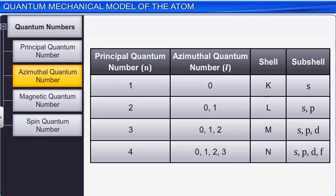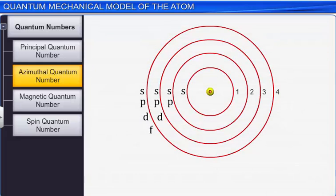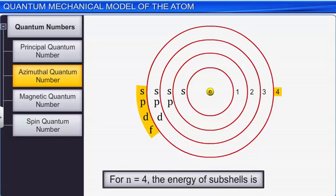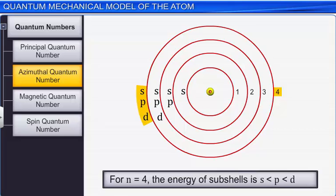Thus, the subshells in the K shell (n=1) is s. In the L shell (n=2), the subshells are s and p. In the M shell (n=3), the subshells are s, p, and d, and so on. The s subshell has the lowest energy, and the energies of the subshells within the same principal shell follow the order s < p < d < f.